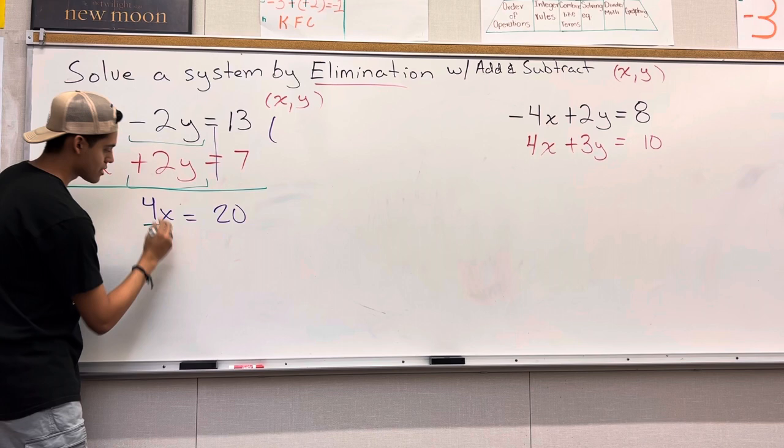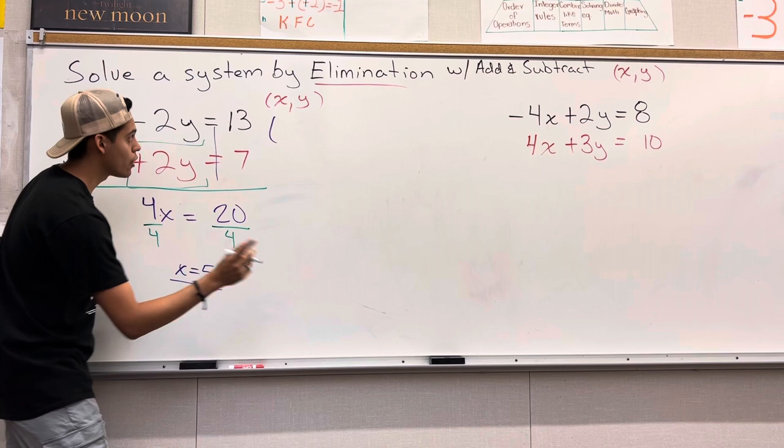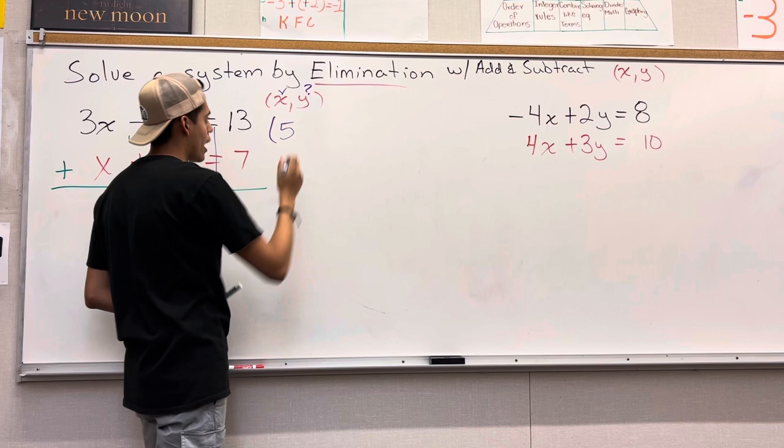Remember, we want x by itself. So we divide by 4 because this is multiplication. We're going to do the opposite, which is division. Divide both sides by 4. And we have x equals 20 divided by 4 would give you 5. So now we know our first half. We know the x. That's checked. Now we need to know the y. What is going to be the y?